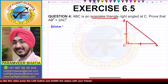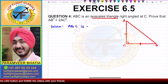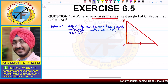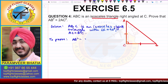Given in this case: ABC is an isosceles right triangle with angle C equal to 90 degrees and AC equal to BC. This is what is given to us, and we have to prove that AB square is equal to 2AC square.